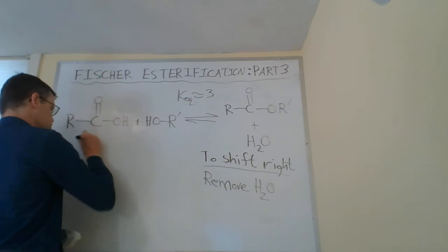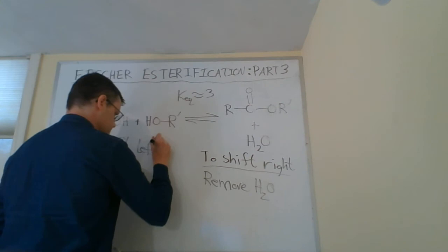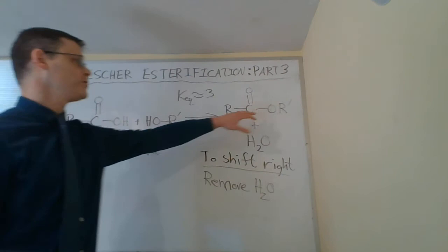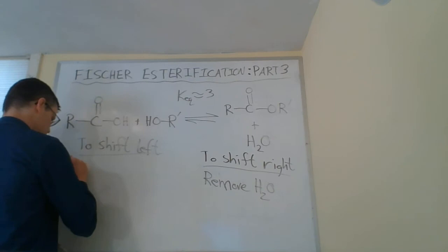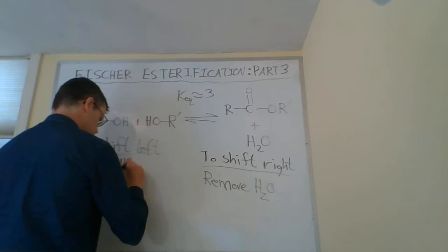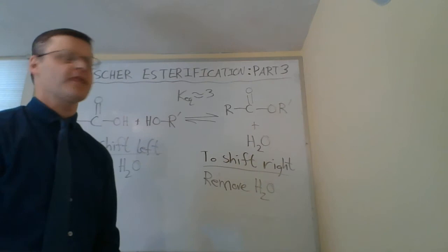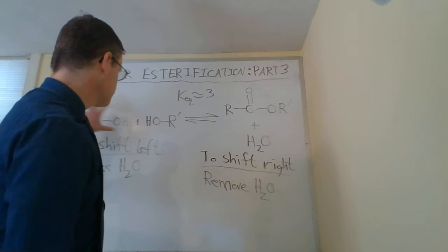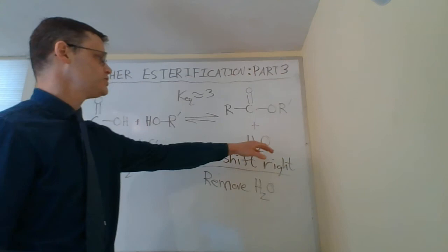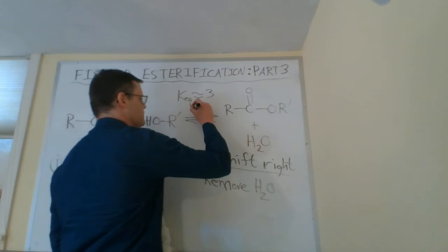Now sometimes we might want to shift to the left. Here we could either remove what's on this side, or we could add excess of what's on that side. So we could add excess, we could dump in more water. And that's probably what you're most likely to do. If you want to hydrolyze an ester, if you want to make it go from the ester back to the carboxylic acid or the alcohol, you're probably just going to dump in a bunch of water into your ester.